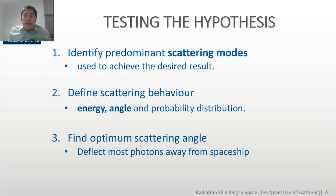To test this hypothesis, we have three aims. The first aim is to identify the predominant scattering modes, that is, which type of photon interaction will give us our desired result. Second, we aim to define a scattering behavior, that is, a mathematical correlation that relates the energy of the scattered photons, the angle of the scattered photons, and the relative proportion of the scattered photons. Lastly, we want to find an optimum angle for which we will obtain the most energetic scattered photons with the highest proportion of scattered photons at the same time.